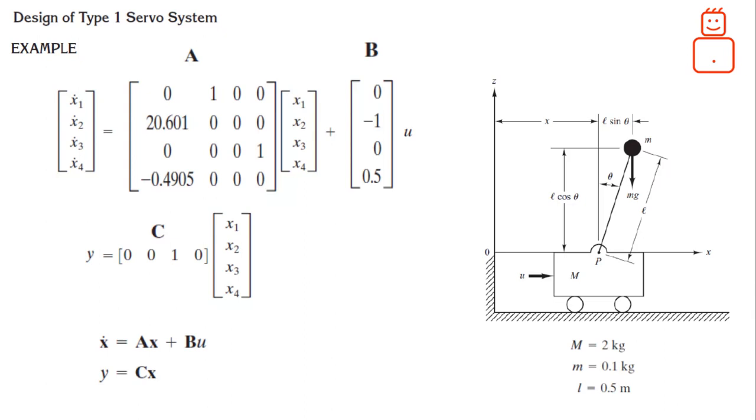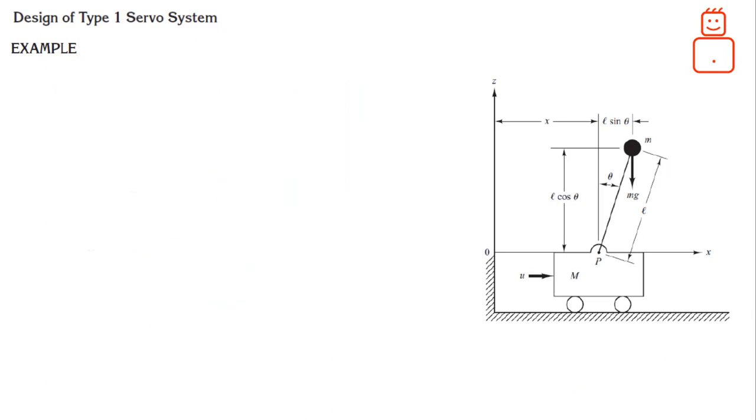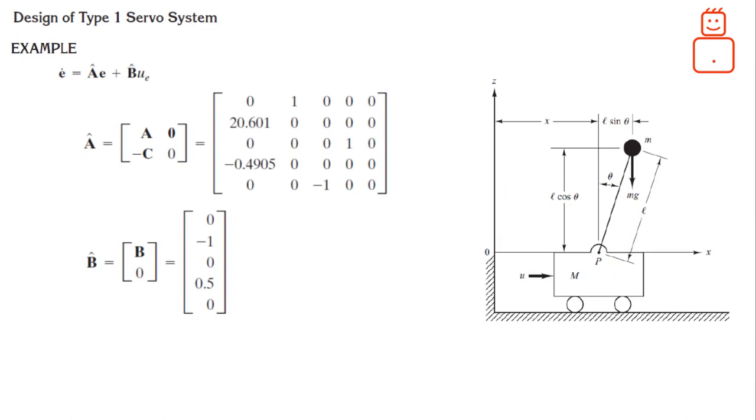For the type 1 servo system, we have driven the state error equation, which is given by the following equation, where the matrix A hat can be written as, whereas the matrix B hat is given as. In this realization, we have the control law is given as, in which the matrix K hat is given as shown. Here, as we have four states along with the scalar output, thus, we need four gains K1 through K4 for the state feedback controller, in addition to a single gain K sub L for the servo.